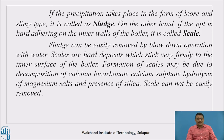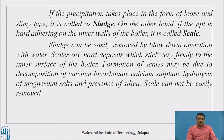Sludge is the initial stage of this process — due to evaporation of water, solids are thrown out and the initial loose precipitation is known as sludge. If the boiler is used continuously, the saturated salts increase and convert into a hard permanent deposit known as scale. Sludge can be easily removed by blow-down operation with water. Scales are hard deposits which stick very firmly to the inner surface of the boiler. Scale formation may be due to decomposition of calcium bicarbonate, calcium sulphate, hydrolysis of magnesium salts, and presence of silica.